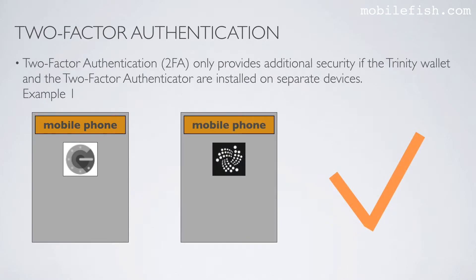Two-factor authentication only provides additional security if the Trinity Wallet and the two-factor authenticator are installed on separate devices. For example, the authenticator on one mobile phone and the Trinity Wallet on another mobile phone. If a thief steals your mobile phone and your Trinity Wallet password, it still cannot access your Trinity Wallet.